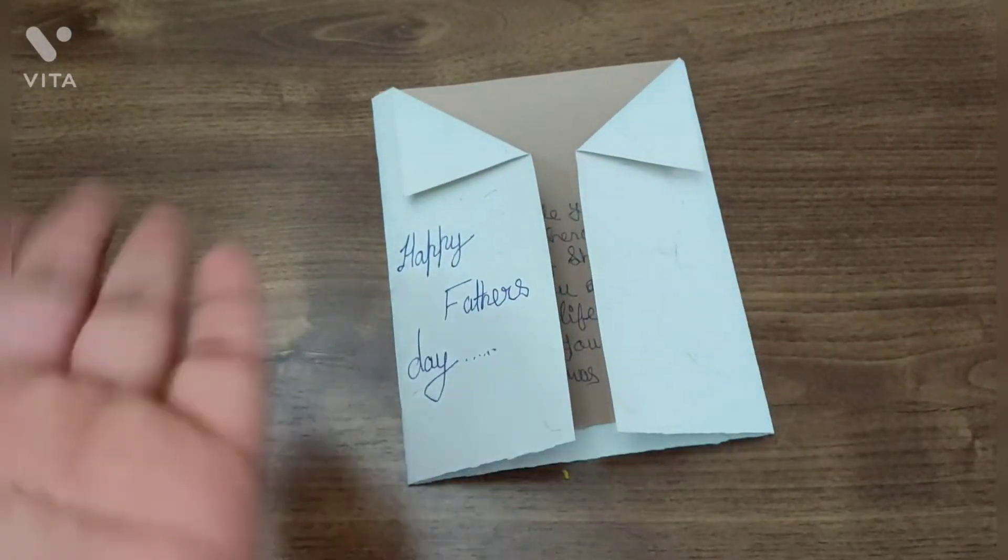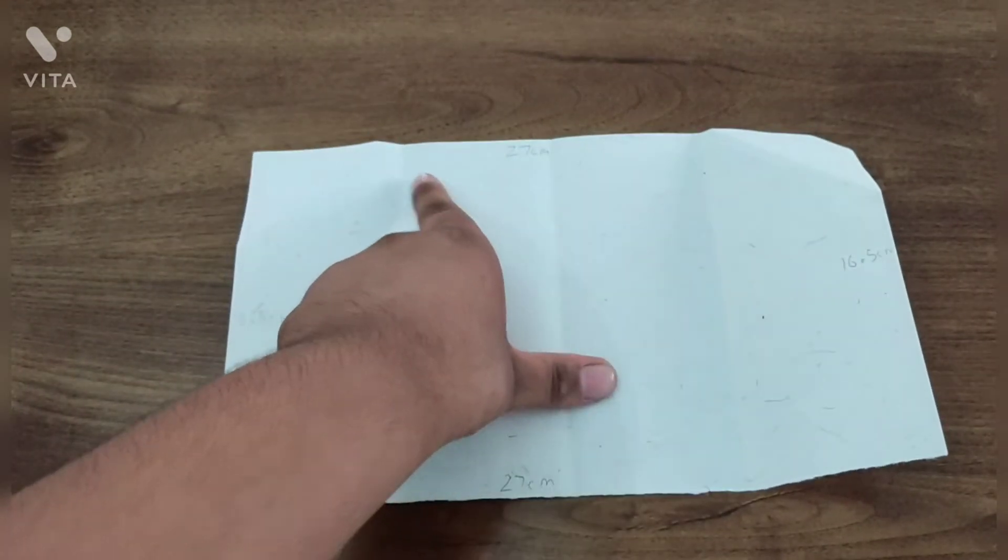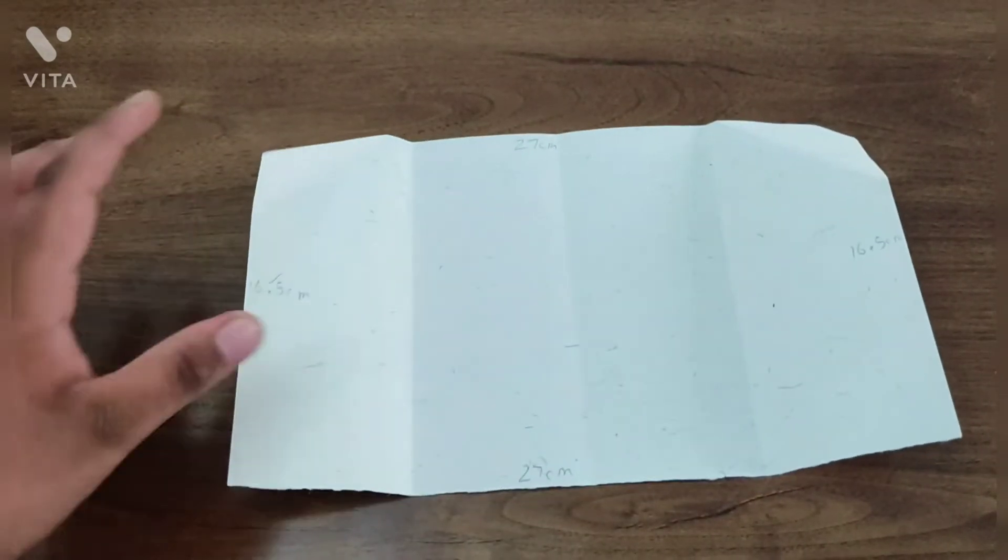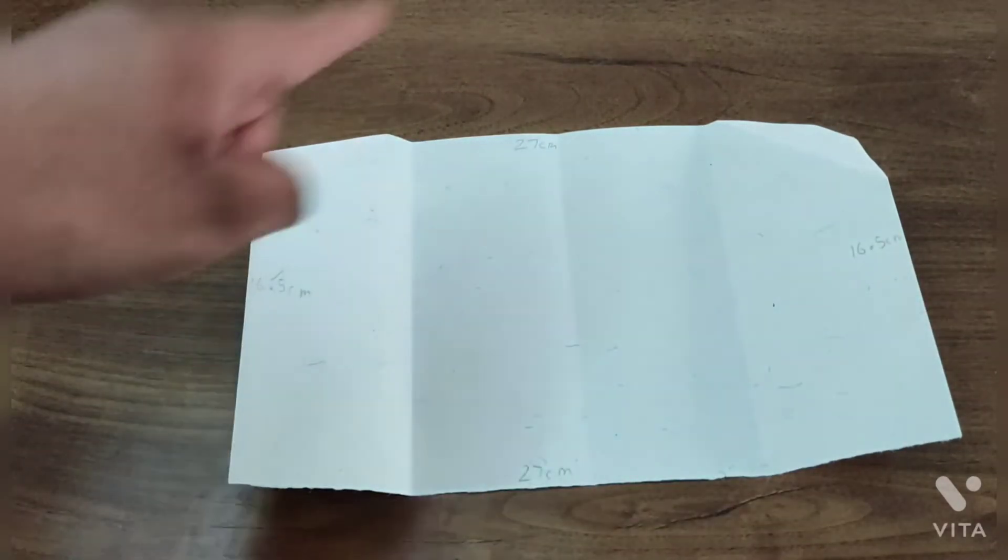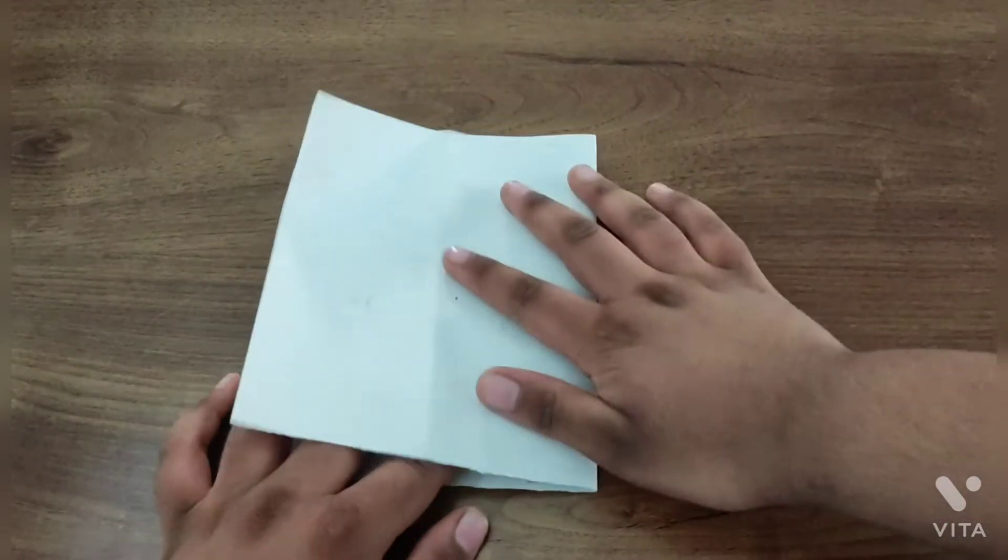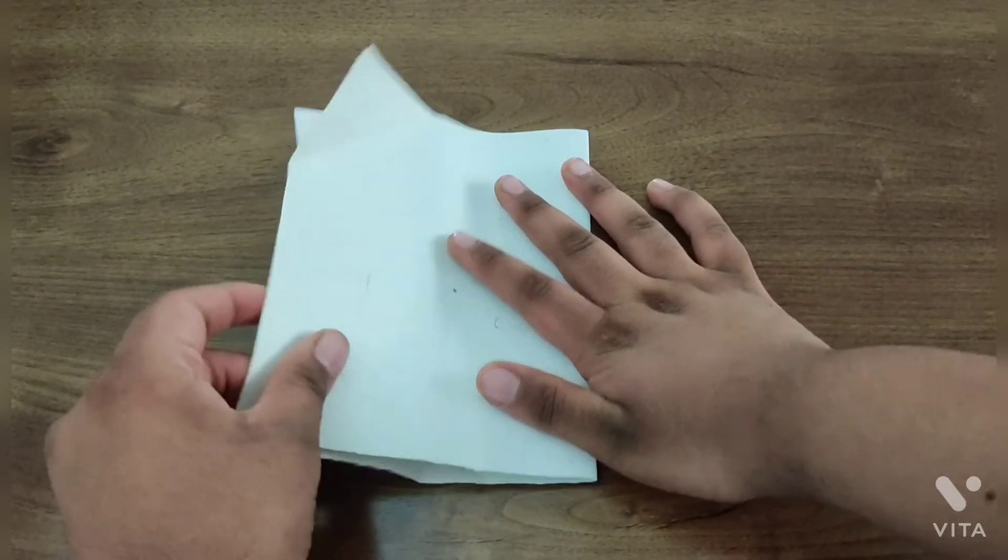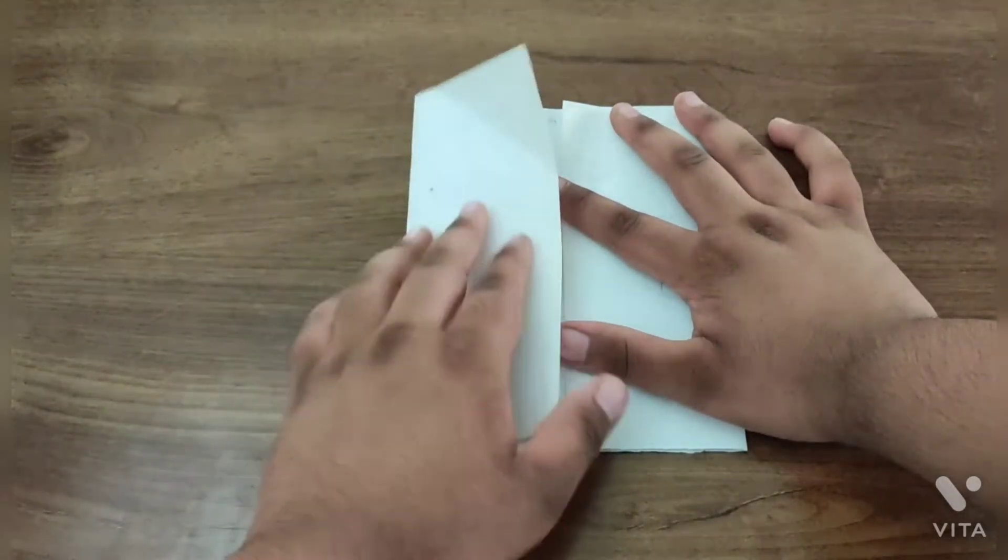So let's start. At first, take a paper 27 centimeter in breadth and 16.5 centimeter in length. Then fold from the middle, then open it and fold from here and the other side also.